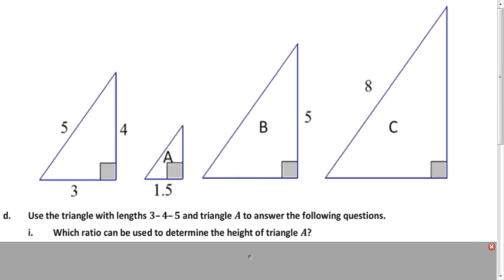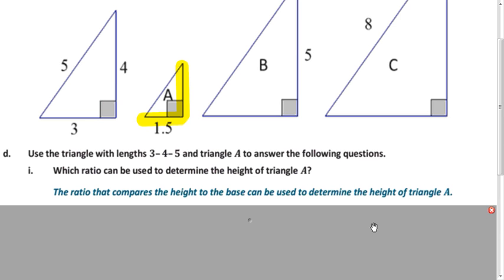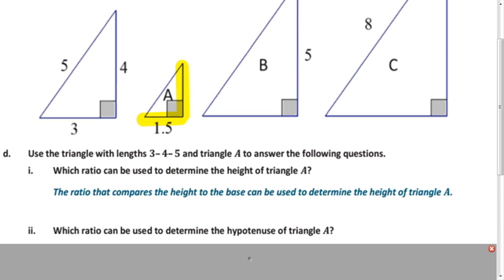Now we're going to solve the rest of these problems by using the within-figures ratio. Which ratio would we use to figure out the height of a triangle? We're looking for the height, and the question you have to ask is: what do I already know? We already know the base of this triangle, so we're going to use the ratio that compares the height to the base. What ratio would we use to find the hypotenuse? We know the base, so we want the ratio that compares the base to the hypotenuse.